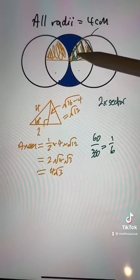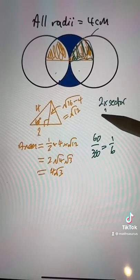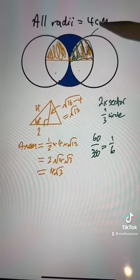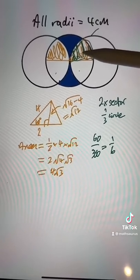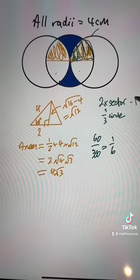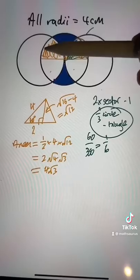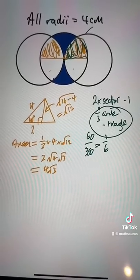That's one sixth of the circle, but I'm going to do it twice, so that's one third of a circle. Then I'm going to subtract the triangle. So one third of the circle minus the triangle gives us this orange area that we want.